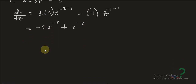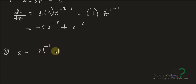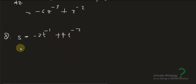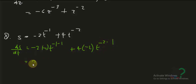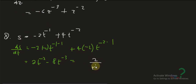Example eight: s equals negative 2t to the negative 1 plus 4t to the negative 2. So ds over dt equals negative 2 times negative 1 times t to the negative 2, plus 4 times negative 2 times t to the negative 3, giving positive 2t to the negative 2 minus 8t to the negative 3, which equals 2 over t squared minus 8 over t cubed.